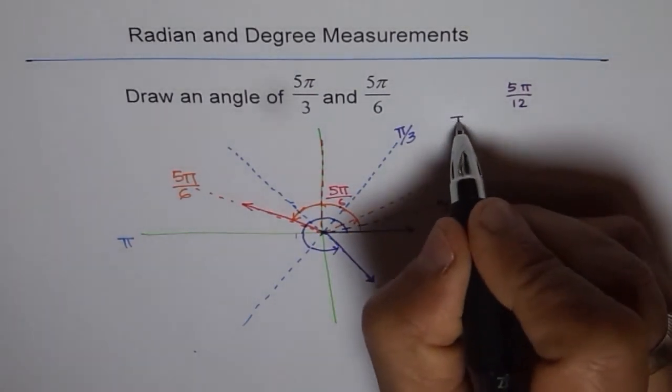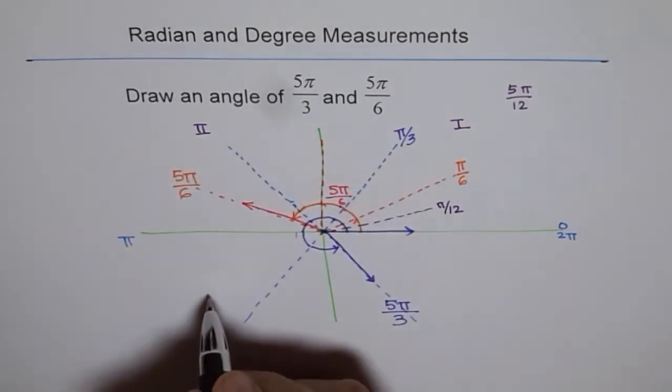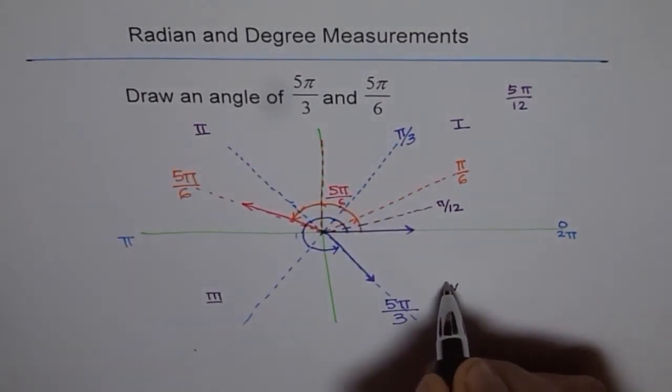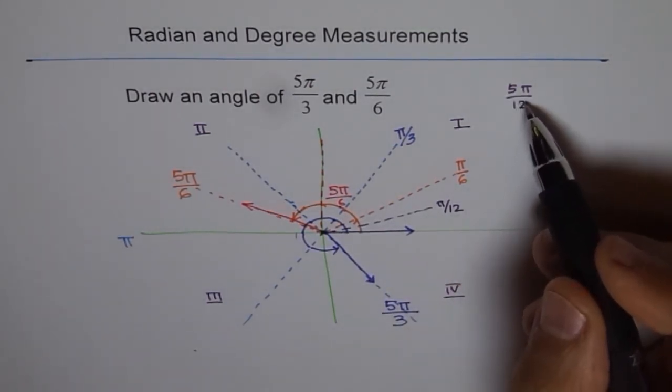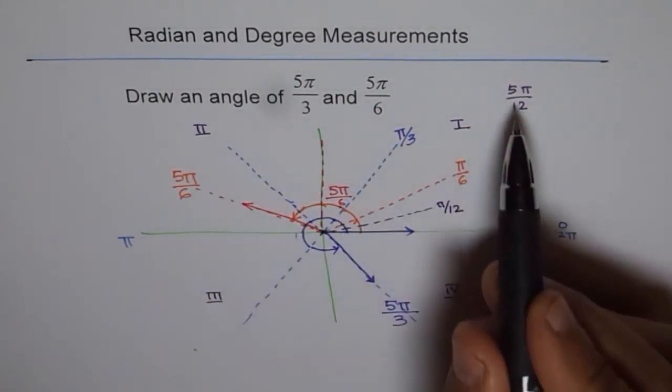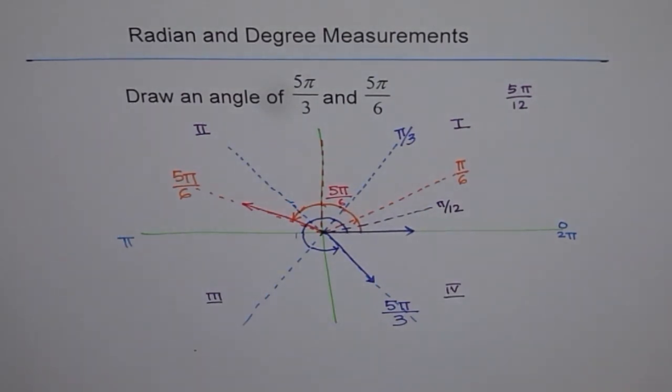This is coordinate number 1. Let me remind you. That is coordinate number 2. This is coordinate number 3 and that one is coordinate number 4. 5π/12. Half of 12 is 6. So 6 are here and 6 are there. So 5π/12 should be in coordinate 1. That's the answer. Thank you.